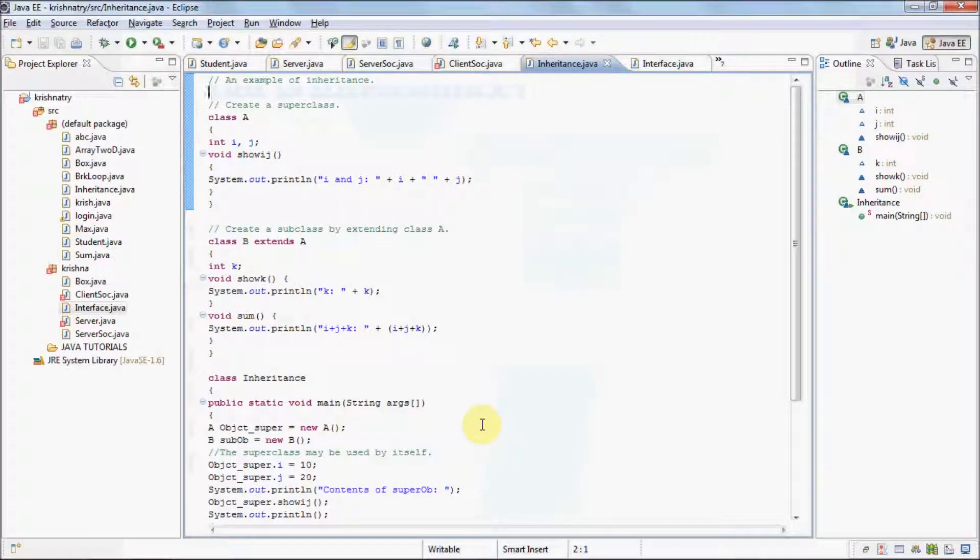Let us consider an example. We have a class A which have two member variables i and j, both are of integer type. It has one member method show i j. We have another class B which extends A. That is, A is our superclass and B is our subclass. B has one member variable k and two member methods show k and sum. We can see that B has extended A. Therefore i and j will be contained in class B also and show i j will also be contained in class B.